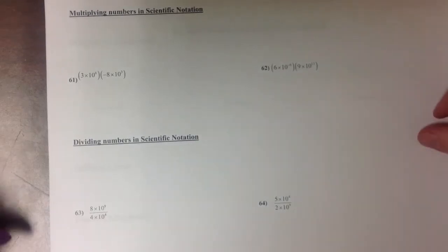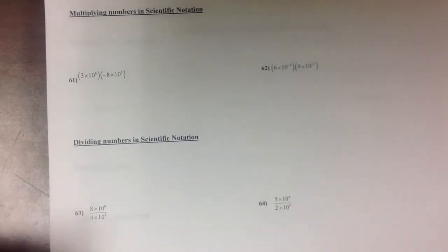Our last part for today is looking at some operations with scientific notation. So how do we multiply numbers that are in scientific notation or divide numbers that are in scientific notation?